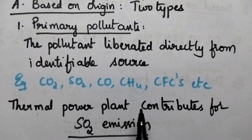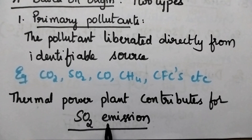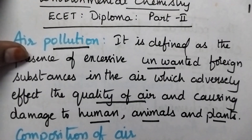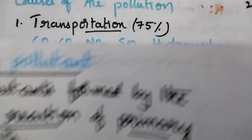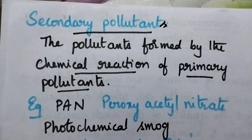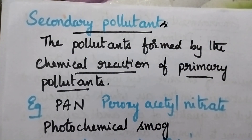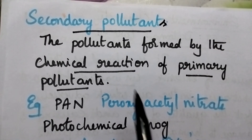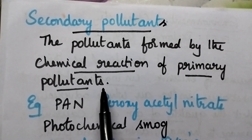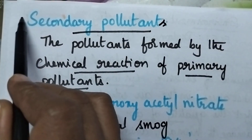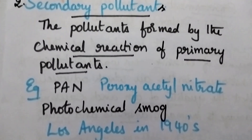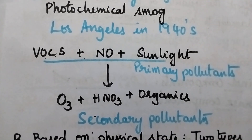When we consider a thermal power plant, it contributes towards the emission of sulfur dioxide. The second category of air pollutants is called secondary pollutants. Secondary pollutants include PAN and photochemical smog. These secondary pollutants are formed due to the chemical reaction of primary pollutants.